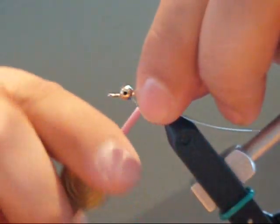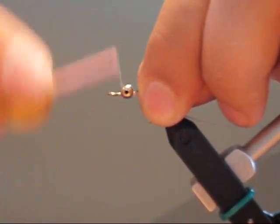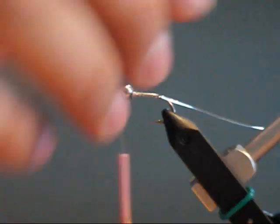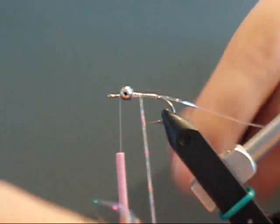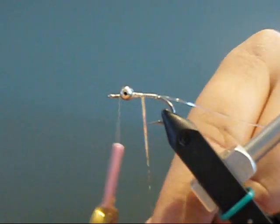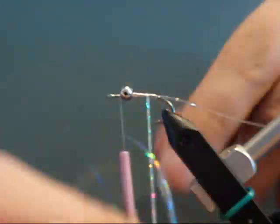Next you take your holographic tinsel and tie that in. Bring your thread to the front of the eyes, then wrap your tinsel all the way back in nice close turns. Then you wind them forward to the eyes.